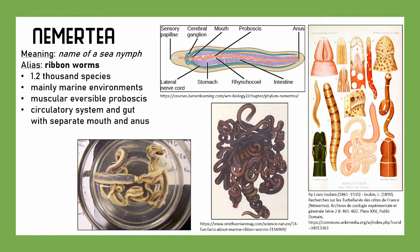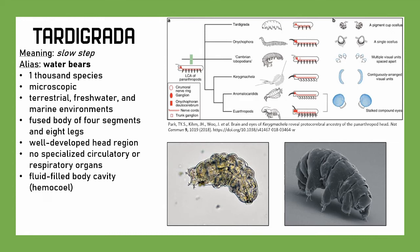We have Tardigrada, the tardigrades. It means 'slow step.' They're also adorably known as water bears or moss piglets. About 1,000 species. They are microscopic, found in terrestrial, freshwater, and marine environments — really everywhere — but if terrestrial, usually in damp environments like moss, which is why they're called moss piglets. They have a fused body of four segments and eight legs, a well-developed head region, no specialized circulatory or respiratory organs, and a fluid-filled body cavity called a hemocoel. They're closely related to the Onychophora — velvet worms — and distantly related to arthropods.